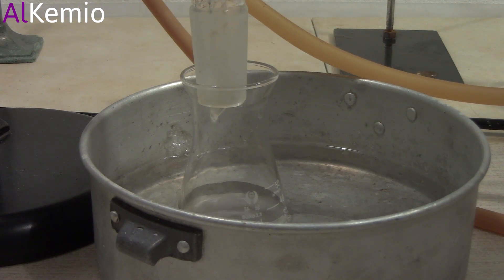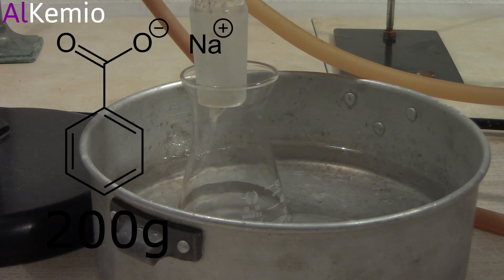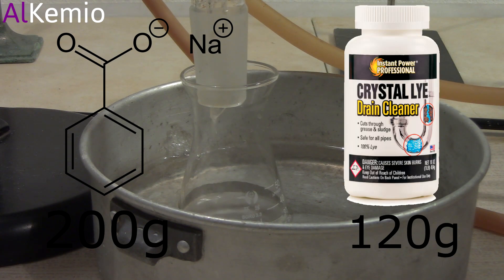Welcome to Alchemia. Today we'll be making benzene by decarboxylation reaction. I decided to use 200 grams of sodium benzoate and 120 grams of sodium hydroxide.